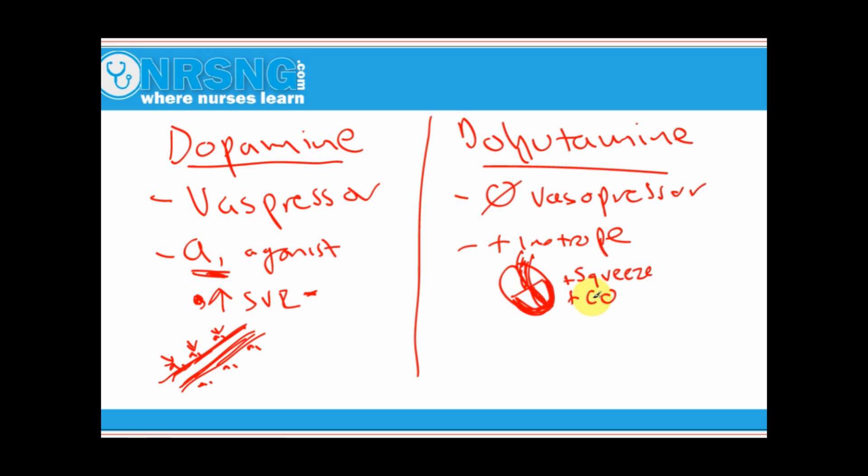The best way to think of this is dopamine is a vasopressor, alpha-1 agonist. Dobutamine actually works on our beta-1 receptors in our central nervous system. Our beta-1 receptors are primarily found in the heart. We talked about this a little bit earlier in another video about beta blockers and things like this. When beta-1 receptors are stimulated, this is part of our sympathetic nervous system, so it's part of our fight or flight.